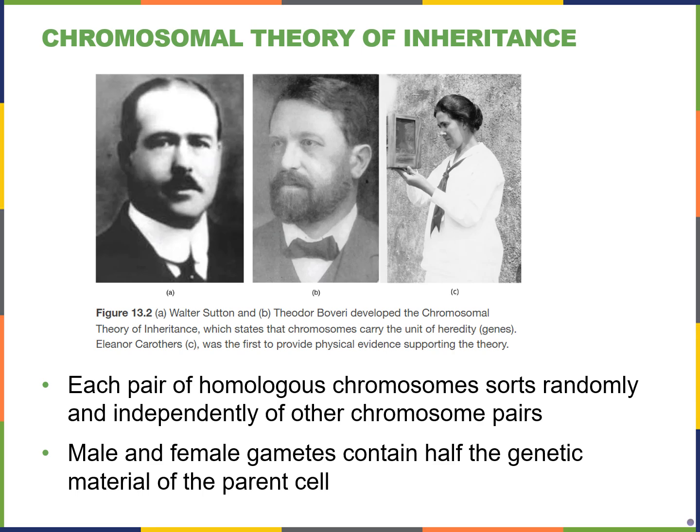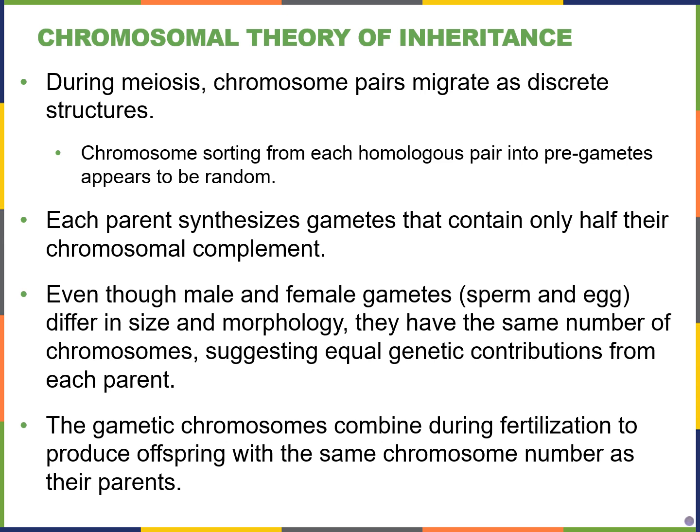Some aspects of the theory include that each pair of homologous chromosomes sorts randomly and independently of the other chromosome pairs, as we saw in our meiosis lecture. We also know from meiosis that male and female gametes — the sperm and egg — have half the genetic material compared to the parent cell. Gametes are haploid, while parent cells are diploid.